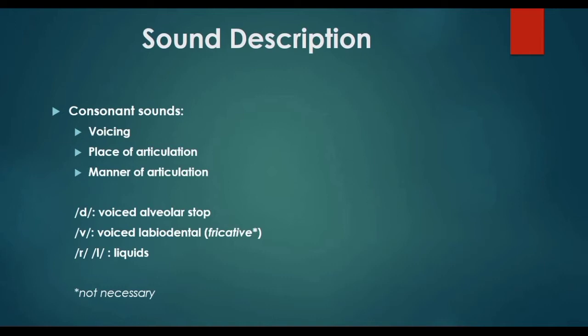Consonant sounds of English are classified according to voicing — the state of the vocal cords when we produce a sound. According to voicing, consonant sounds can be voiced or unvoiced, or voiceless, which is another term. Another way to classify consonant sounds is the place of articulation — the place in which we articulate the different sounds — and also manner of articulation, how we produce those sounds.